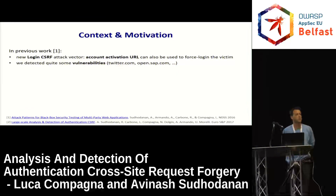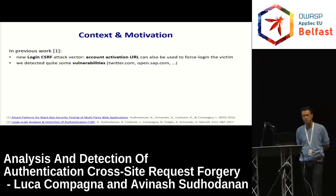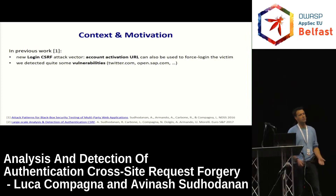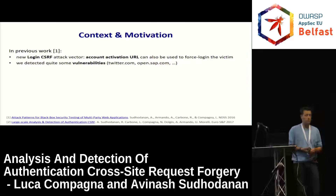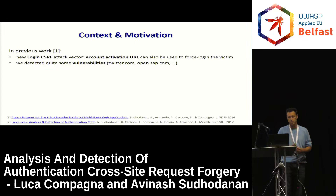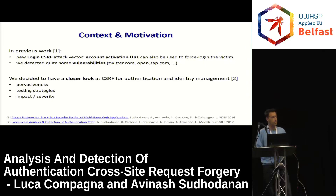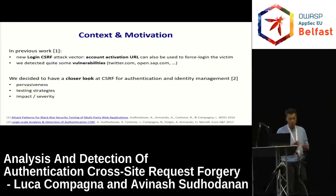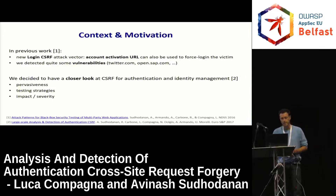Some context and motivation to start. Last year we presented in Rome another work about black-box security testing. Among the attack strategies we were using there, we were also including login cross-site request forgery — in particular, used for account activation URLs. This was a new attack vector we introduced last year, and we detected quite a number of vulnerabilities with it.